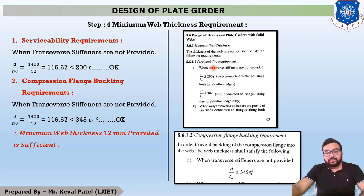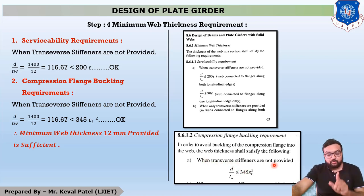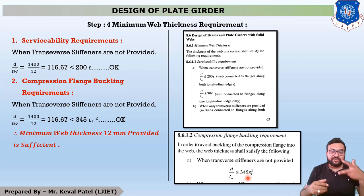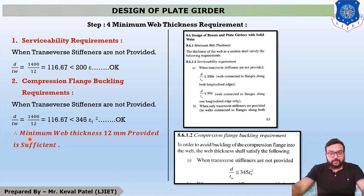The second check is the compression flange buckling requirement, given on page number 64. For the unstiffened case, D/Tw = 116.67, which must be less than or equal to 345ε²m. This condition is also satisfied, confirming that the assumed web thickness of 12 mm is sufficient. Minimum web thickness 12 mm provided is sufficient.